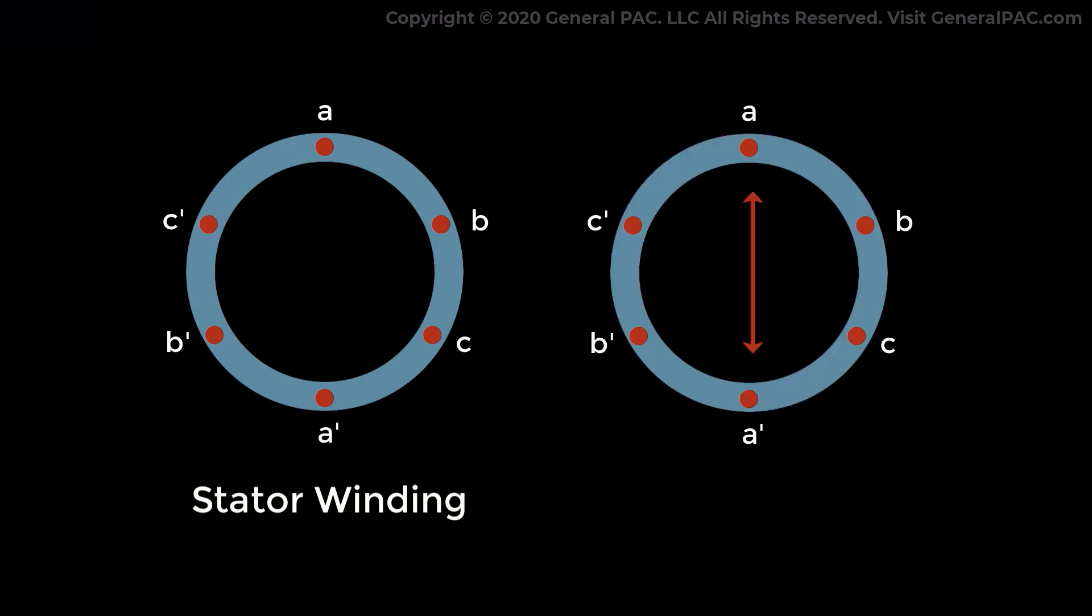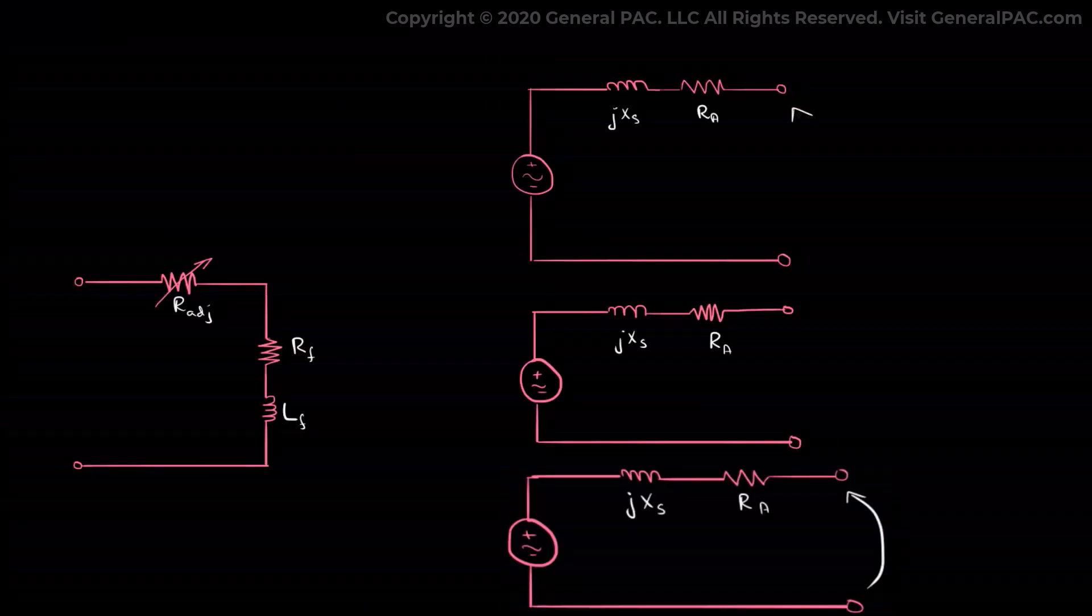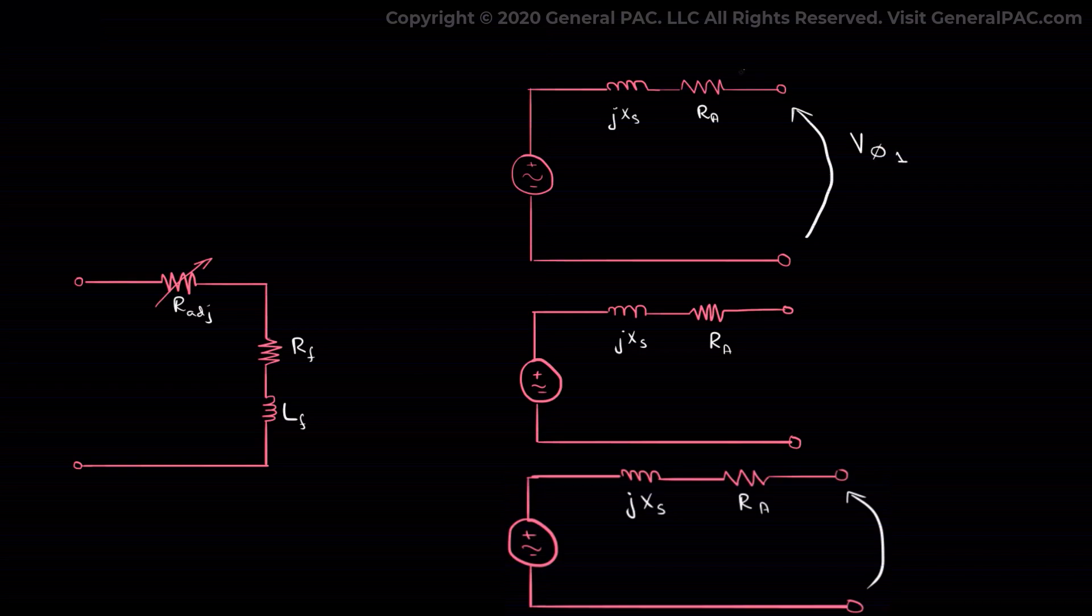When a three-phase voltage is applied to the stator winding, it causes phase current Ia to flow there, and as a result it produces a rotating magnetic field Bs rotating at the synchronous speed ω_sync.